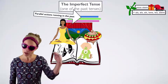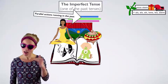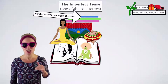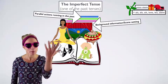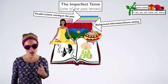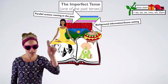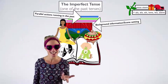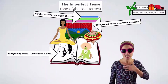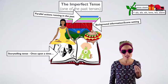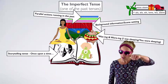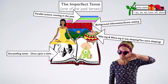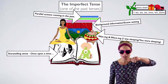It is used when there are parallel actions running alongside each other in the past. It shows background information — that's why we have these theatre curtains. It's scene setting. It's also the storytelling tense — once upon a time. It's the was-ing and the were-ing, the spinning top tense.